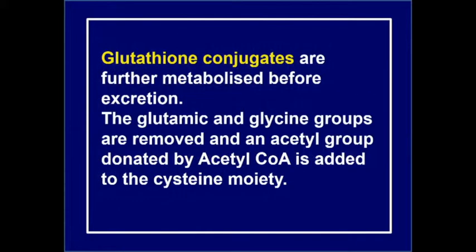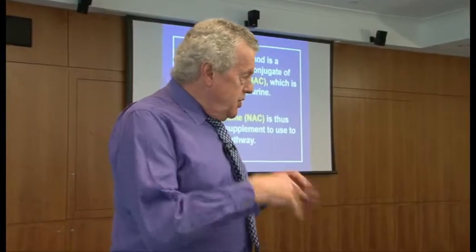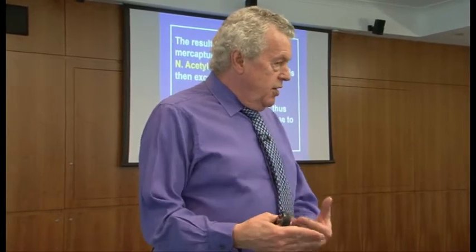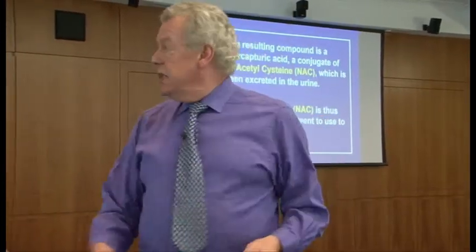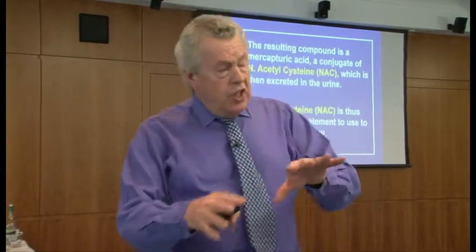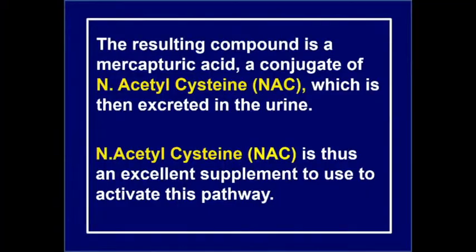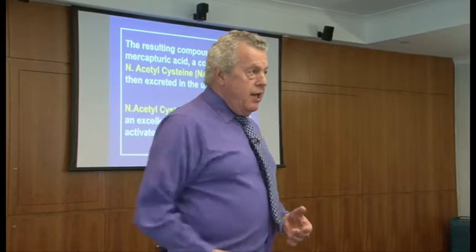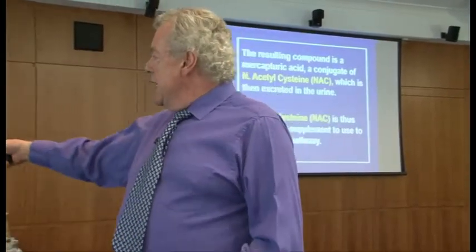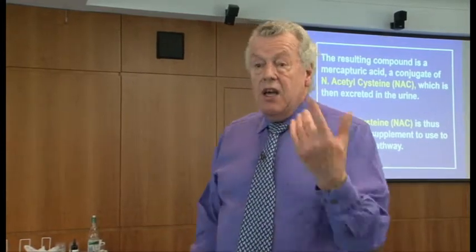Glutathione conjugates are further metabolized before excretion. The glutamic acid and glycine groups are removed, and an acetyl group donated from acetyl-CoA is added to the cysteine. This makes a substance in the body called N-acetylcysteine, or NAC for short. NAC locks on or conjugates with the toxin and allows you to pass it out in the urine. N-acetylcysteine is a perfectly natural substance in the body — you don't find it in foods; you actually make it inside the body.